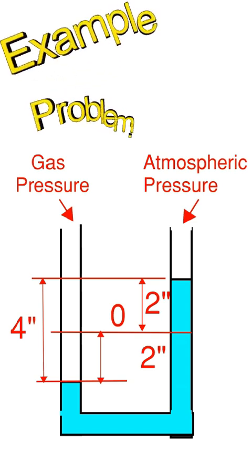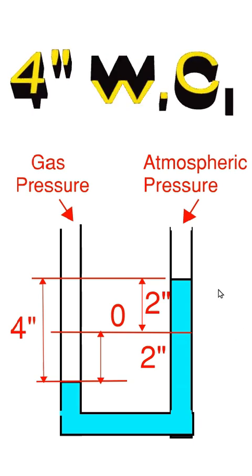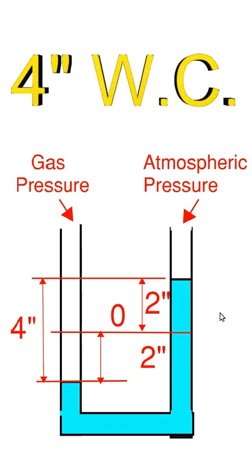In this example problem, the left side of the tube is connected to the gas pressure. The right side is open to the atmospheric pressure. If it went two inches up on the right side and two inches down on the left side, it accumulates the total height of four inches. So your water column is equivalent to four inches of water column.